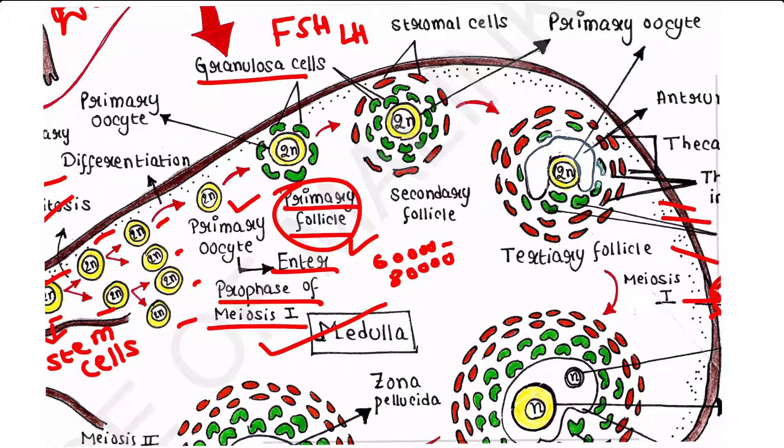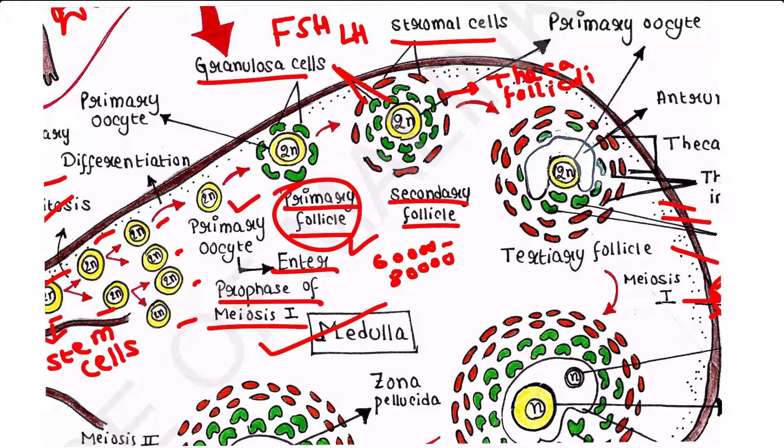Let's see what happens. The primary follicle gets surrounded by more layers of granulosa cells, and stromal cells form an outer layer. That layer is called theca follicle, and this entire structure is called secondary follicle. These surrounding cells, the stromal cells and granulosa cells, they nourish the developing oocyte. In primary follicle, only one layer of granulosa cells are present around the primary oocyte.